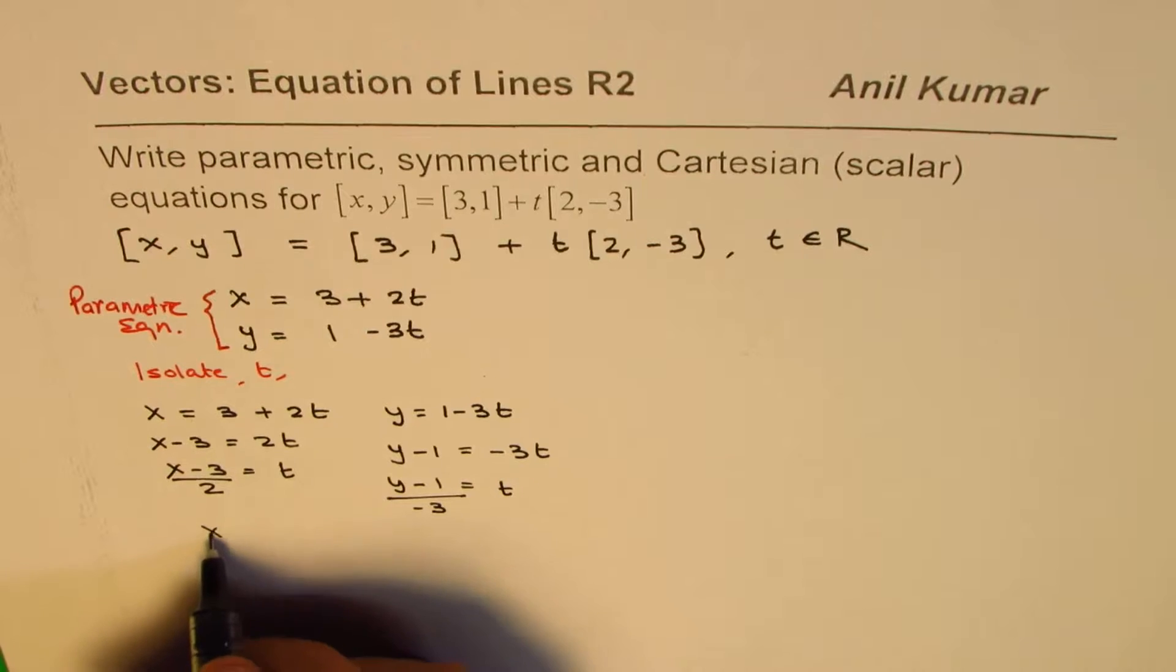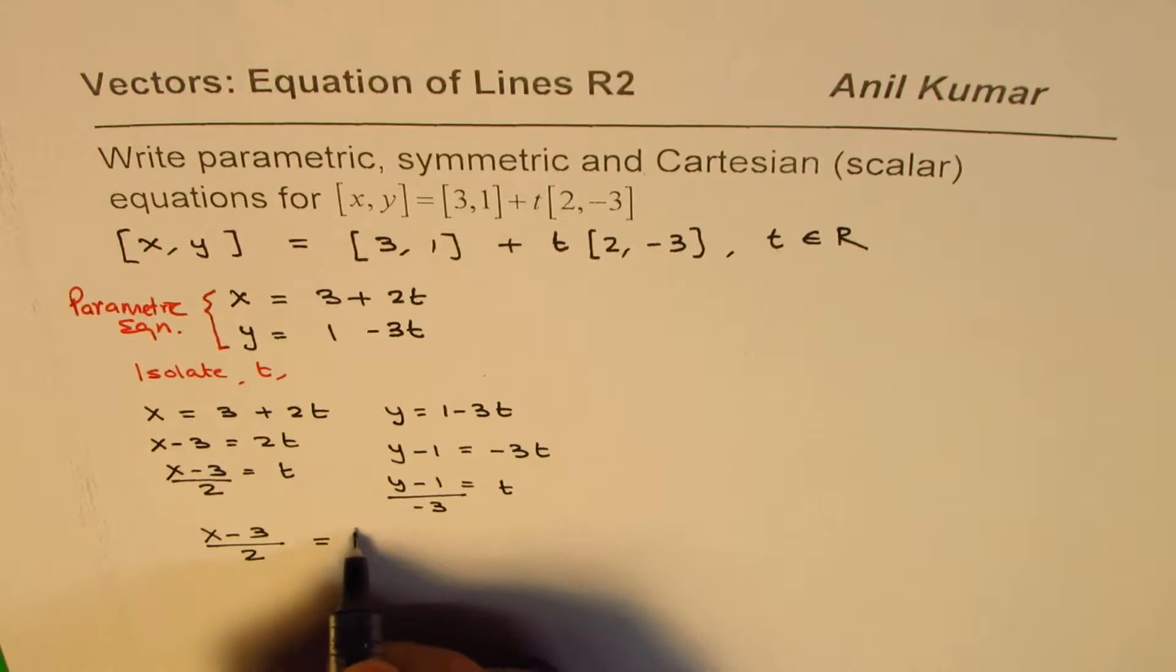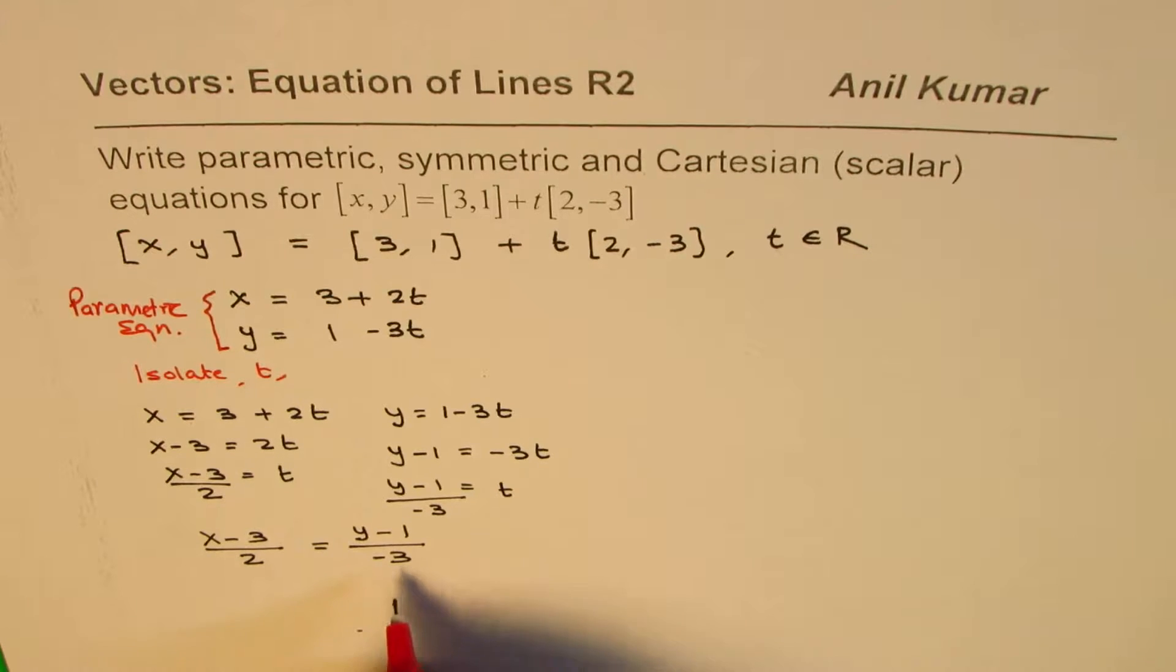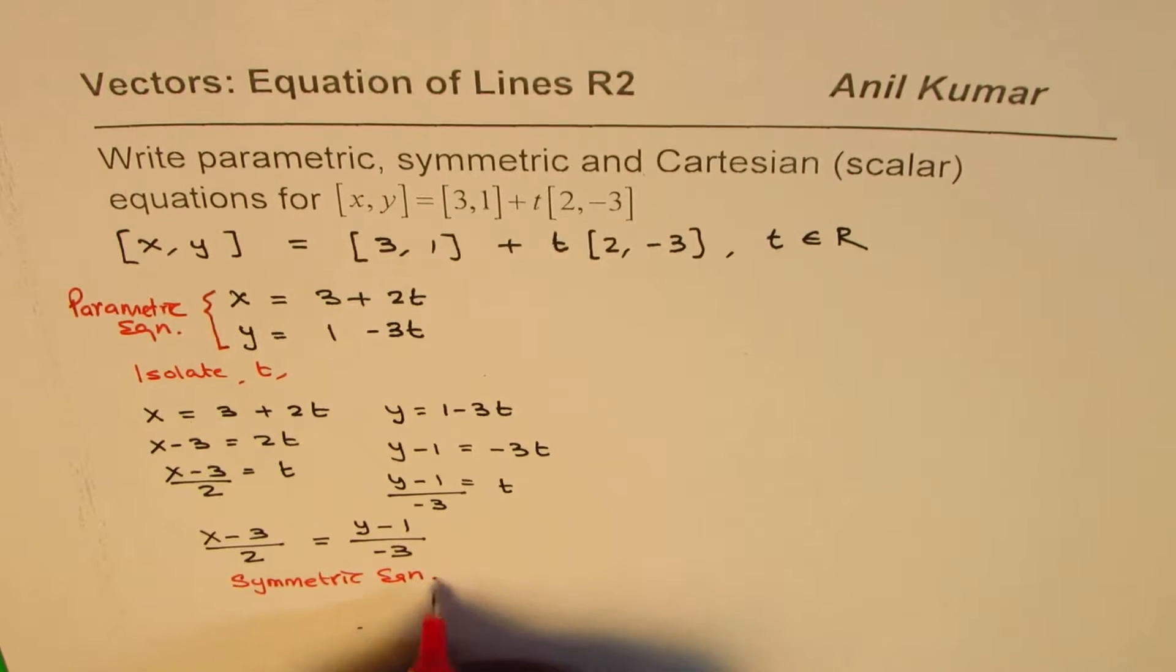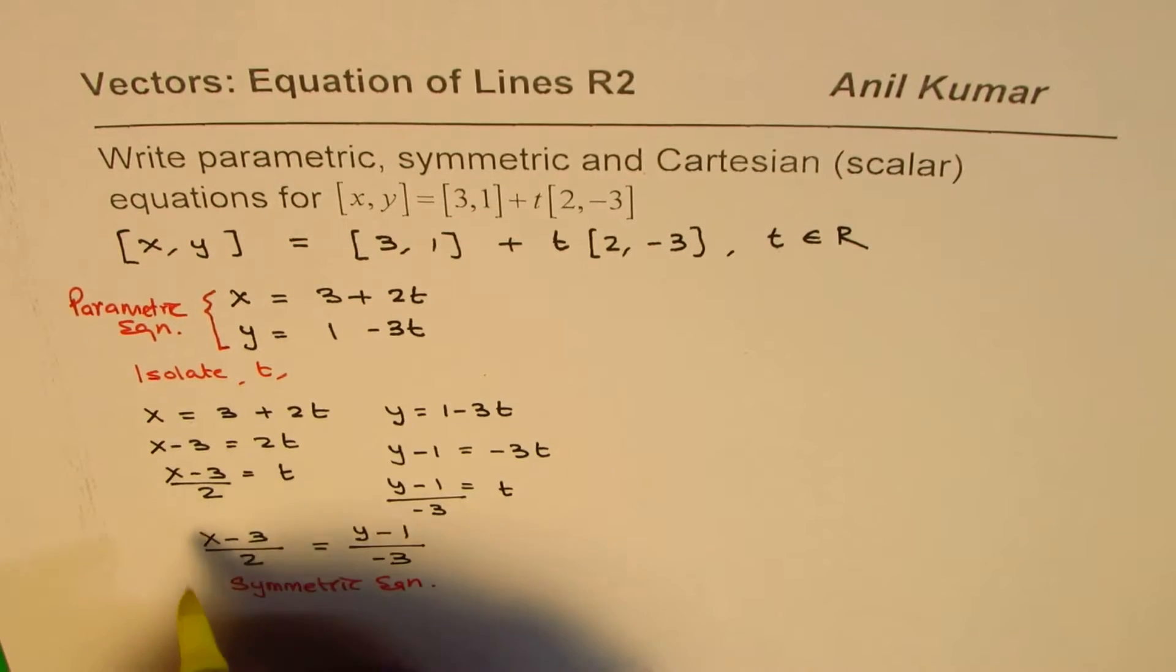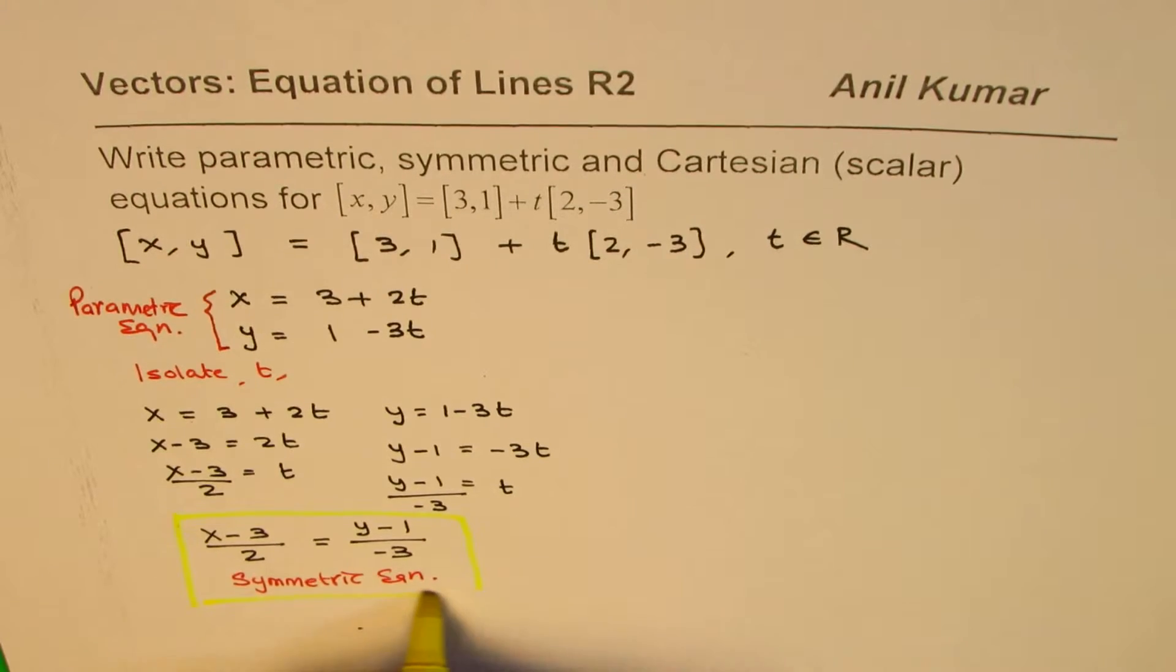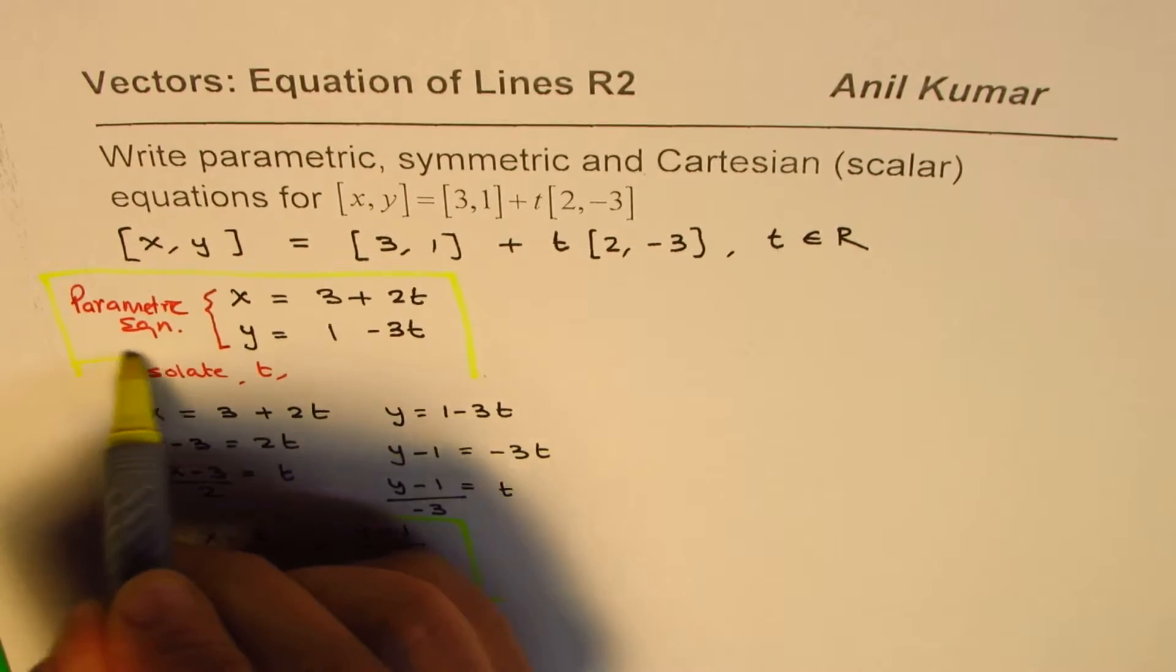And so we could write our equation as (x - 3)/2 is equal to (y - 1)/(-3). Once you write like this, that becomes your symmetric equation. So this is the symmetric equation. So we've got two types of equations: one is parametric, the other one is symmetric from the given vector equation.